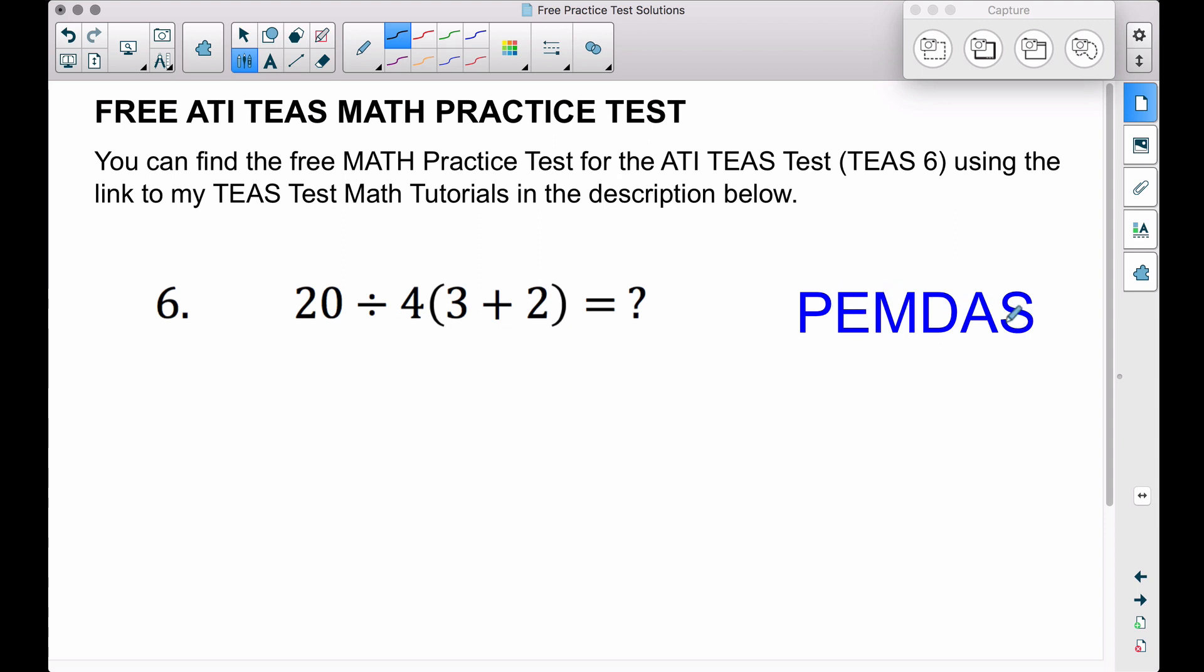want to do here is do the order of operations correctly. The P stands for parentheses, so let's go ahead and take care of the parentheses first. I'm going to bring everything else down and we're going to work inside of these parentheses. 3 plus 2 gives us 5, so we're done with parentheses. I still have them there just to remind me that eventually we're going to multiply, and I say eventually because you have to be careful here.